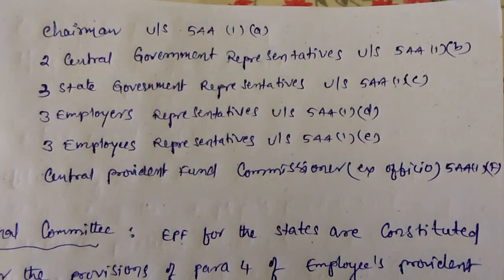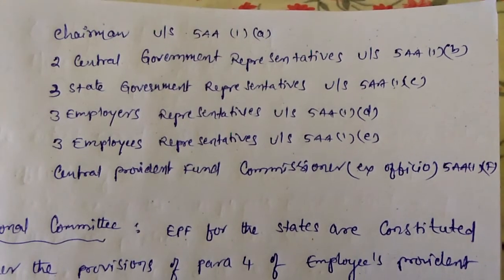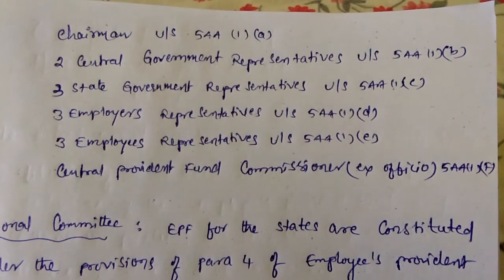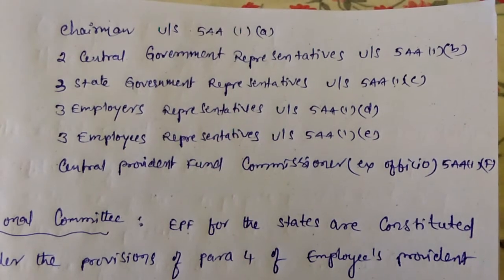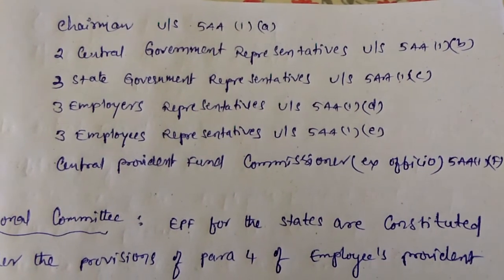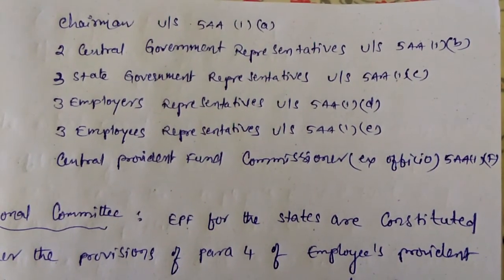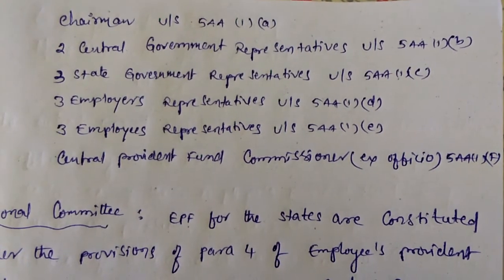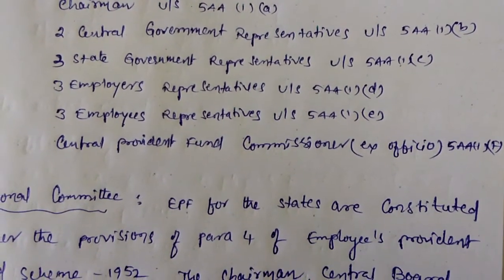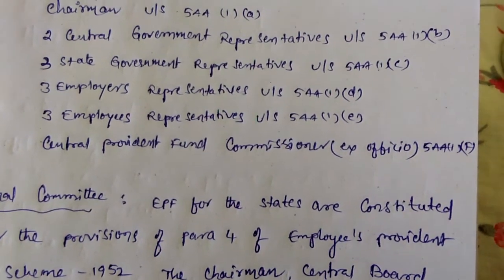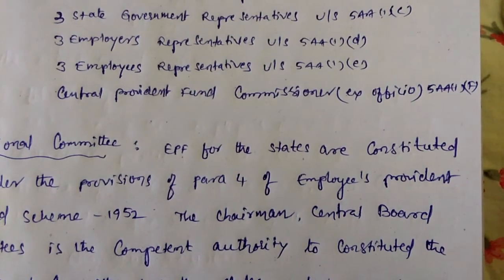The Executive Committee constitution includes: Chairman under Section 5A, Subsection 1(A); 2 Central Government representatives under Section 5A, Subsection 1(B); 3 State Government representatives under Section 5A, Subsection 1(C); 3 Employers representatives under Section 5A, Subsection 1(D); and 3 Employees representatives under Section 5A, Subsection 1(D).